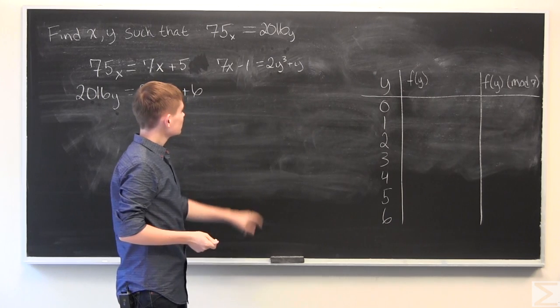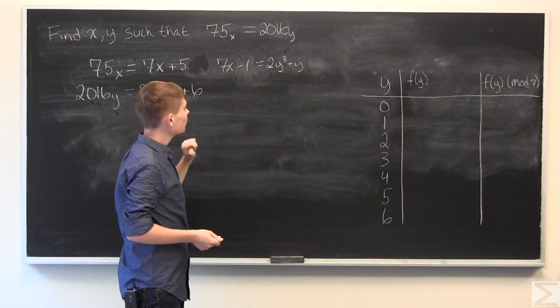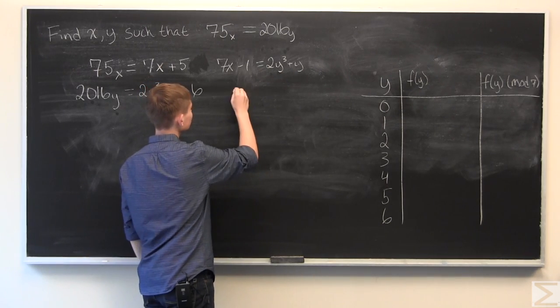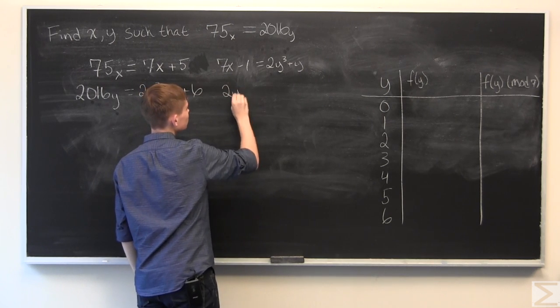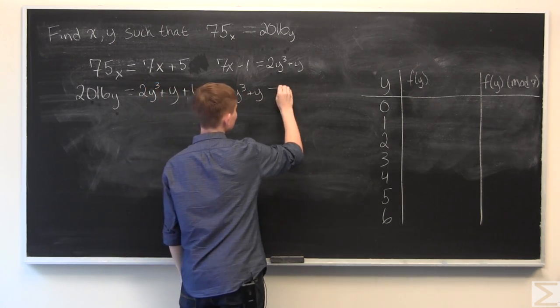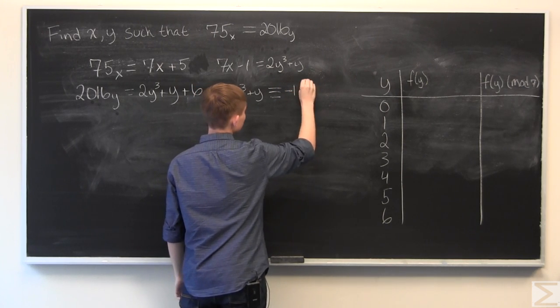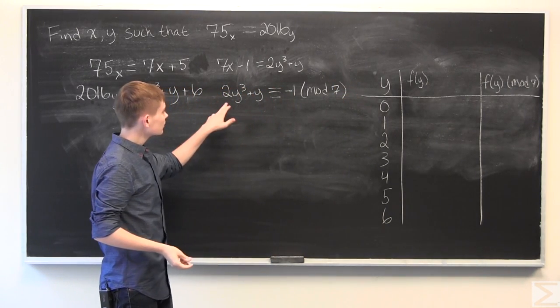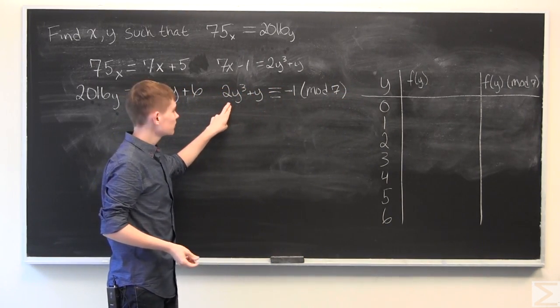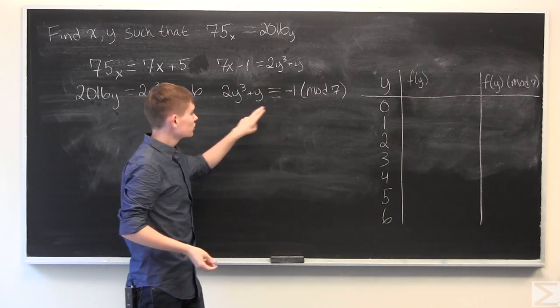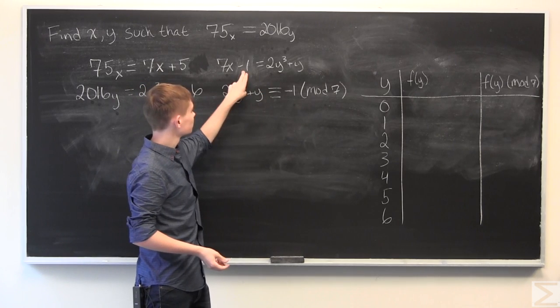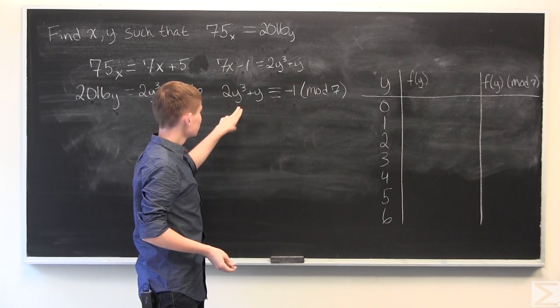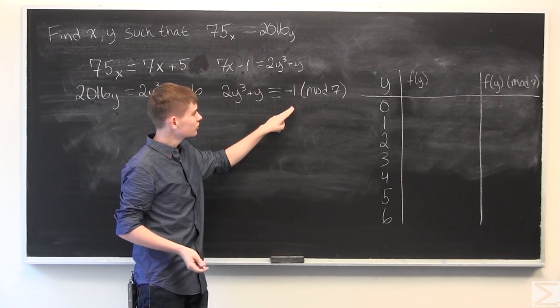Now, we can change this into a modular arithmetic expression like so. 2y cubed plus y is congruent to negative 1 mod 7. And all this is saying is that 2y cubed plus y is equal to a multiple of 7, 7x minus 1. That's all this is saying.